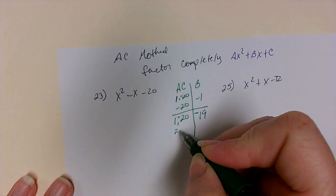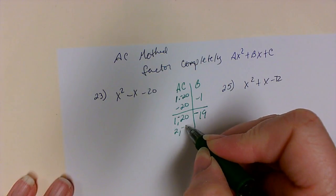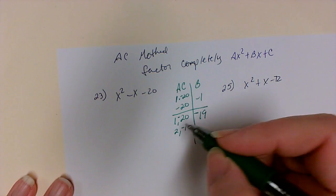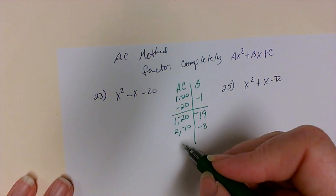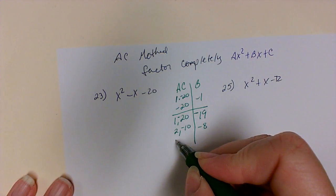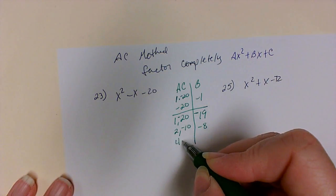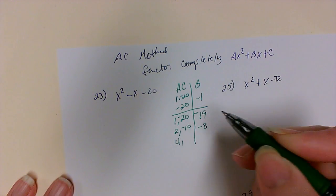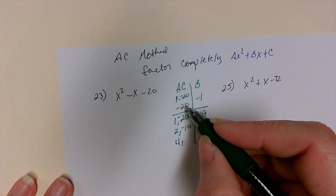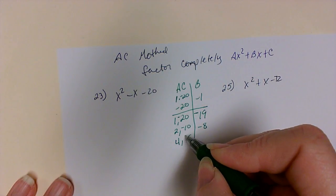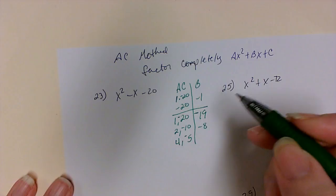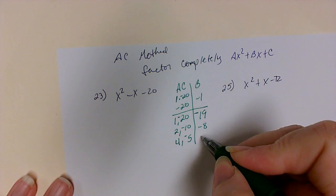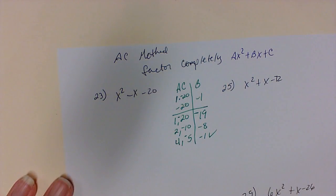20 also divides by 2, so 2 times negative 10 gives me negative 20. When I add them, I get negative 8. 4 will divide evenly into 20: 20 divided by 4 gives us 5, which makes it negative 5. When we multiply those we get negative 20, and when we add them we get negative 1, which is what we're looking for.